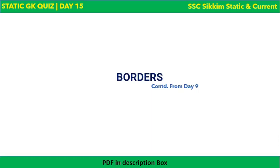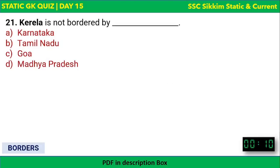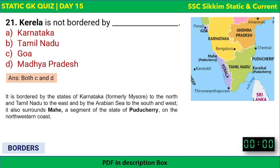Now, borders — a continuation from day nine. Kerala is not bordered by which of these states? The options are Karnataka, Tamil Nadu, Goa, and Madhya Pradesh. The correct answer is both Goa and Madhya Pradesh. Kerala is bordered by Karnataka to the north, Tamil Nadu to the east, and the Arabian Sea to the south and west. It also surrounds a segment of Puducherry called Mahe on the northwestern coast.